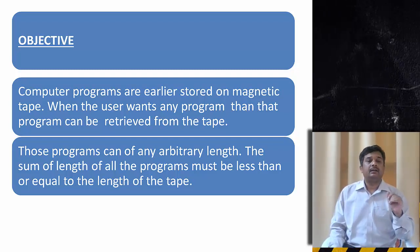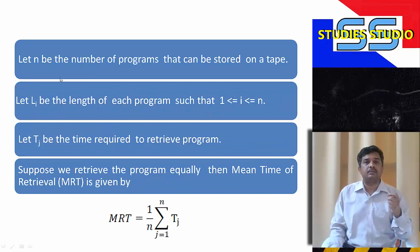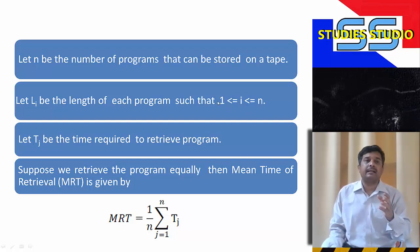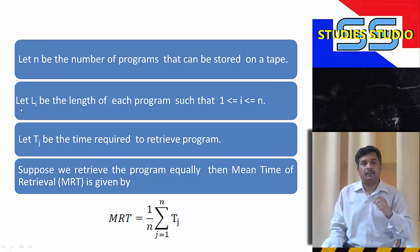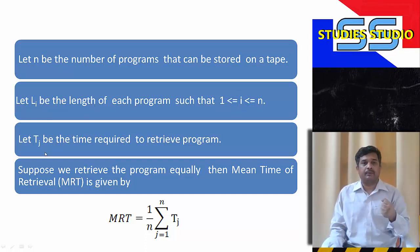So basically to write that in a symbolic way: Let n be the number of programs that are stored on a tape, and Li be the length of each. So for ith program, let Li be the length of the program. And Tj is the time required to retrieve that particular program.